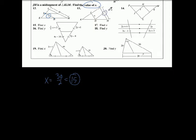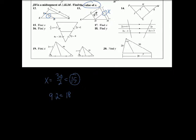Let's look at number 13 — same kind of deal, except this one has X as the third side. The midsegment is 9. Remember, the third side is twice as big as the midsegment. So 9 times 2 is 18, and X equals 18. The midsegment JH is half the length of the third side — if the midsegment is 9, the third side must be 18, because 9 is half of 18.